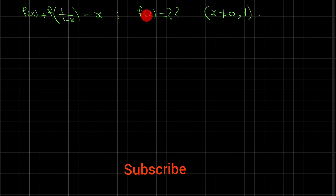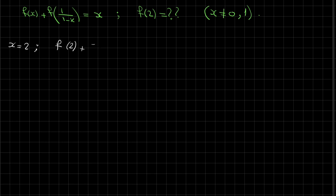To find f(2), let's start by substituting x = 2. Substituting x = 2, we get f(2) + f(1/(1-2)). Here 1 minus 2 is minus 1, so we get f(2) + f(-1) = 2.